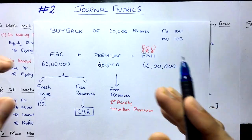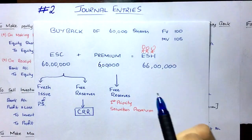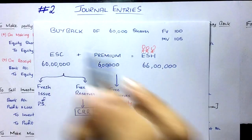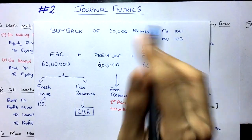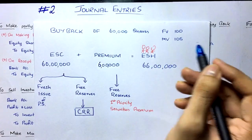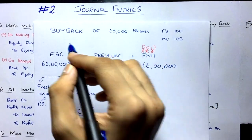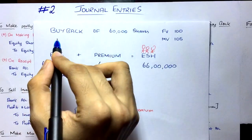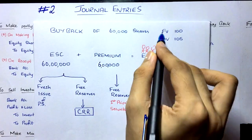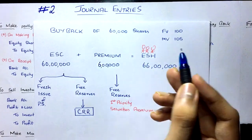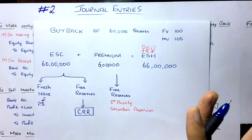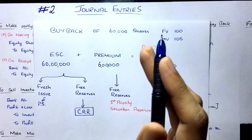The shareholders should be ready to sell their shares to the company — that's called buyback. Do you think shareholders will sell just at face value or market value? No, because they can sell directly in the open market at market value. So the company offers a premium price above the market value so that shareholders are willing to sell their shares to the company.